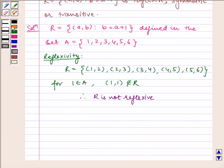Now checking for symmetry. We have (1,2) belongs to R but (2,1) does not belong to R. Therefore, R is not symmetric.